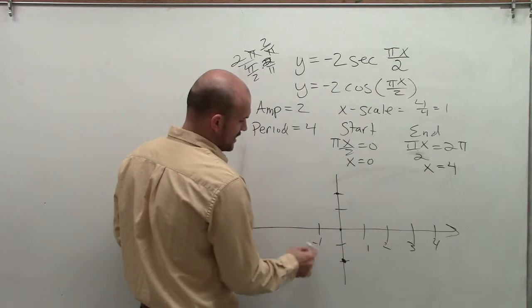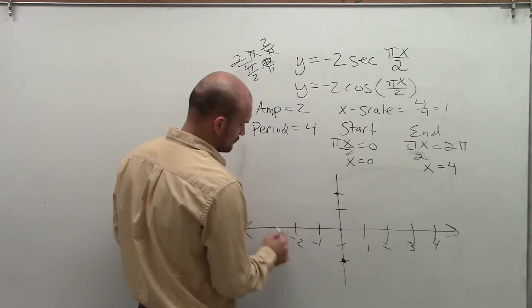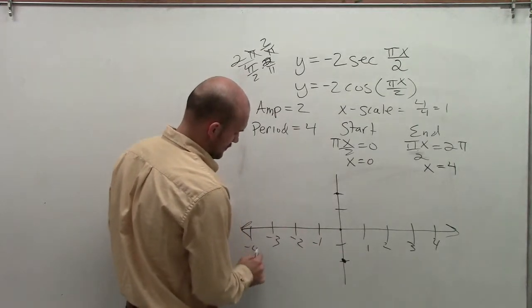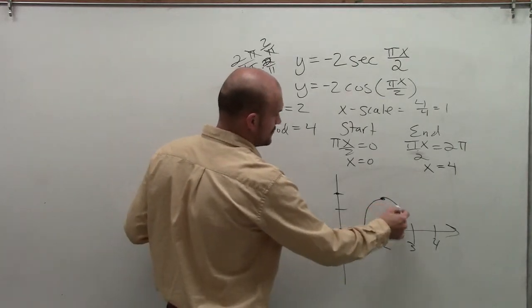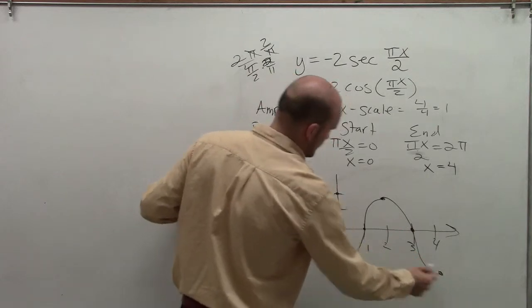To graph the cosine graph, let's actually do the negative version as well. So therefore, to graph this, I'm going to go to my next critical point, up to the next one, up to the next one, down to the last one.